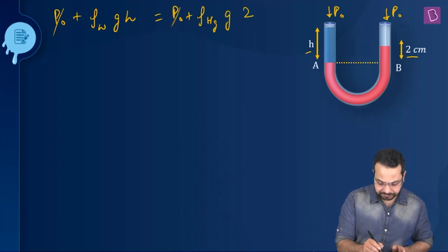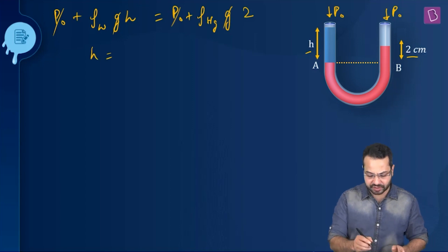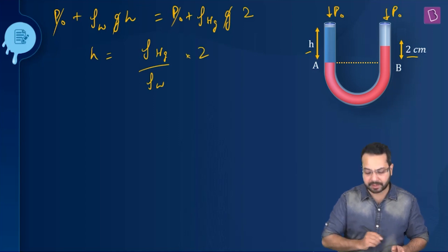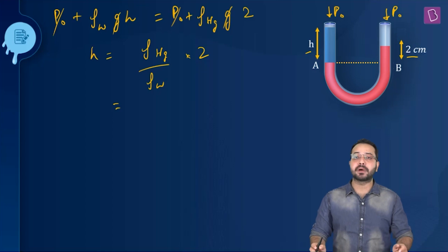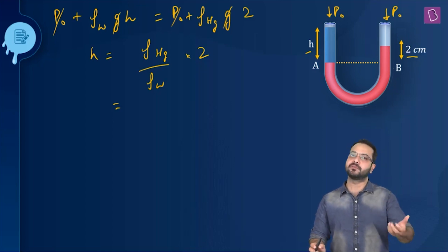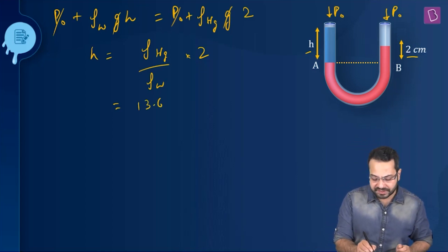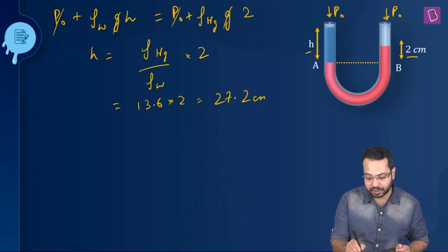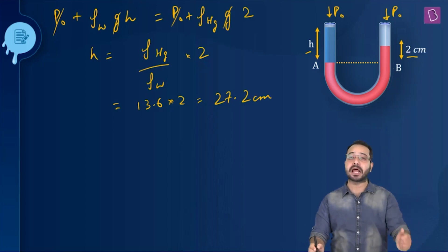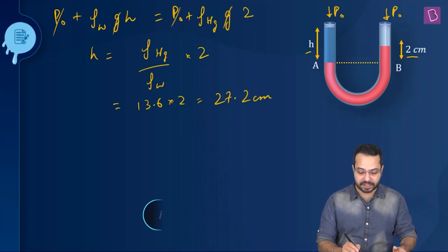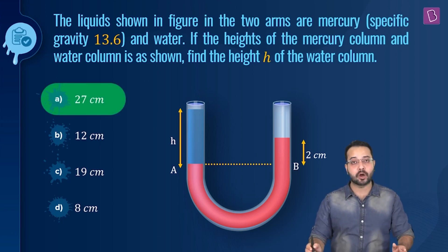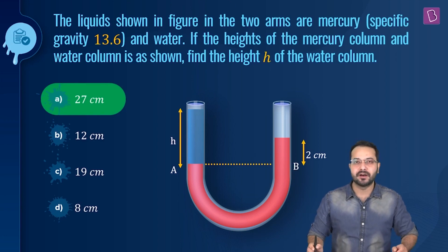P₀ cancels and g cancels. I am left with h = (density of Hg / density of water) × 2. The density of mercury divided by density of water is the specific gravity of mercury, which is 13.6 as given in the question, and 13.6 multiplied by 2 gives 27.2 cm. Looking at the options, option A is going to be my right answer.